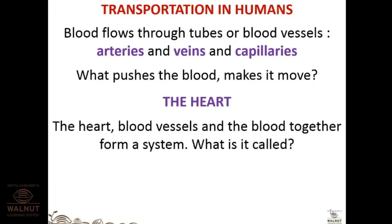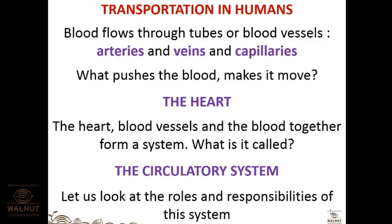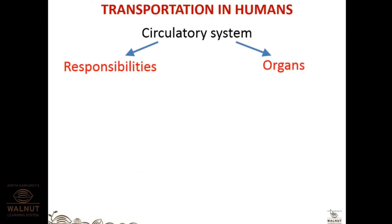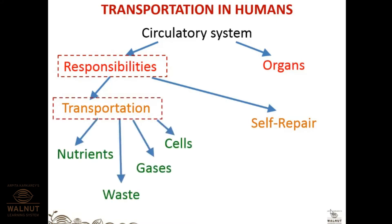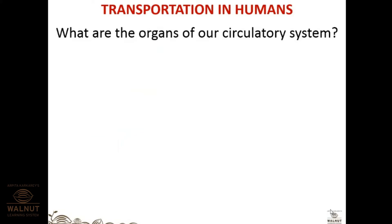The responsibilities of the circulatory system include transportation and self-repair. When you have cuts or wounds, platelets try to clog that wound. Under transportation, nutrients, waste, gases, and cells all need to be transported. The organs of the circulatory system are the heart and blood vessels.